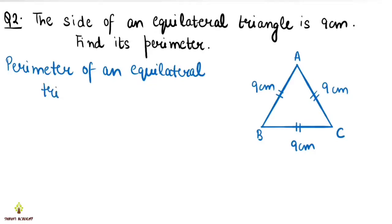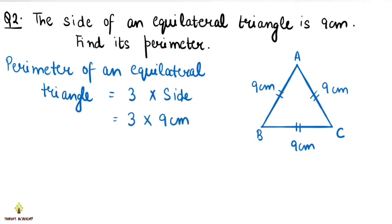The perimeter of an equilateral triangle is 3 multiplied by side. If we do side plus side plus side, then 9 plus 9 is 18, and 18 plus 9 is 27. We can also do 3 multiplied by 9, which is 27 cm. Because multiplication is a shortcut of addition. So the formula for the perimeter of an equilateral triangle is 3 into side. The perimeter of this triangle is 27 cm.